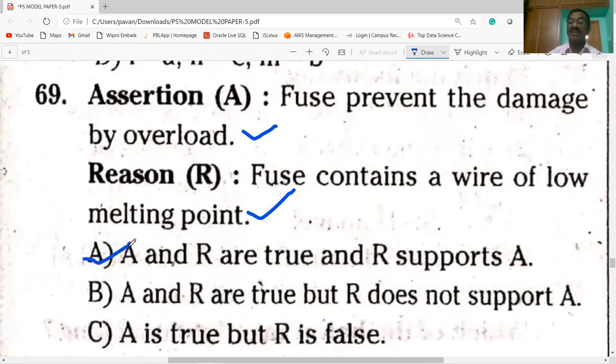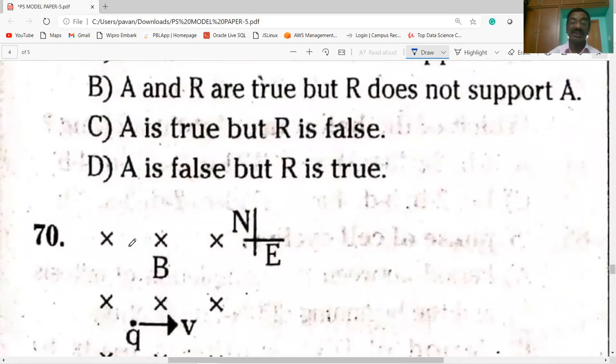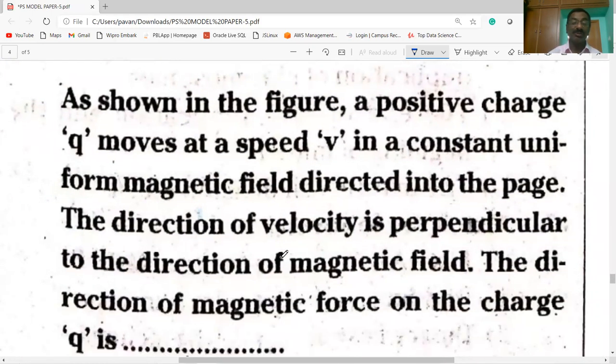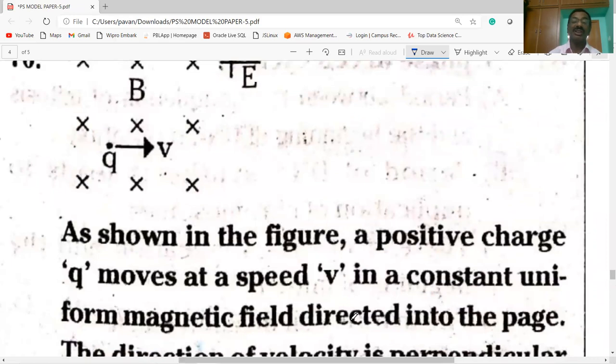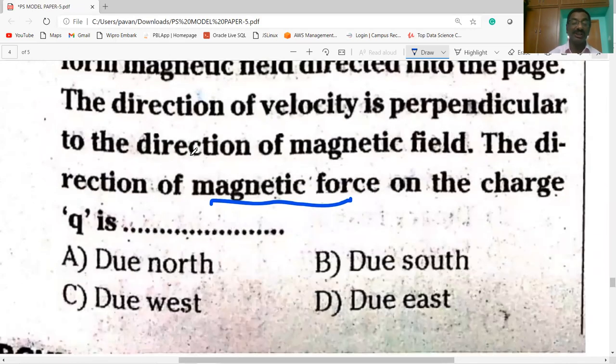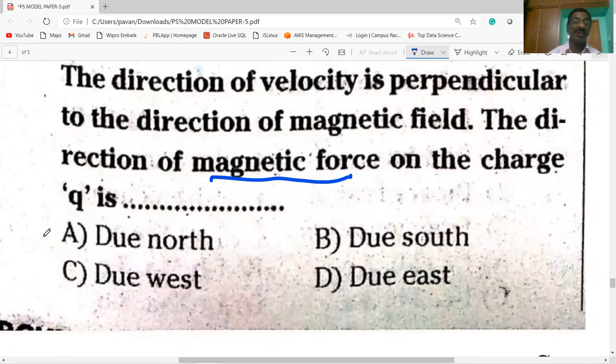Next question on the screen. A and R are true and R supports the statement A. Next question. Here it is B, magnetic field. A charge Q is moving perpendicular to the direction of the magnetic field, which is into the page, with velocity V. What is the direction of the magnetic force? The charge is positive, so magnetic force is upward. Due north, due south, due west, due east - it must be due north. When it is into the page, it is due north.